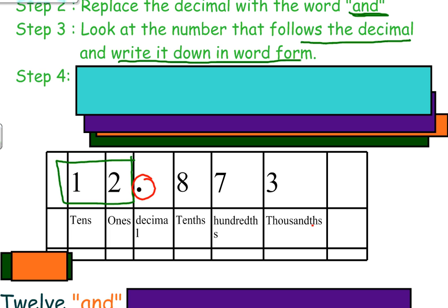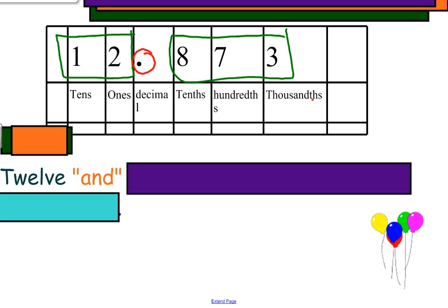The next step we need to do is to look at the number that follows the decimal and write it down in word form. So I'm looking at simply this number, and I look at it as a whole number. I would actually say this number as eight hundred seventy-three and I will write it down as eight hundred seventy-three.